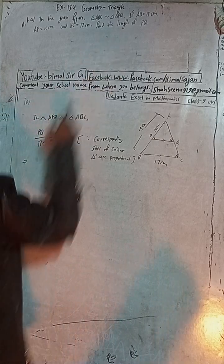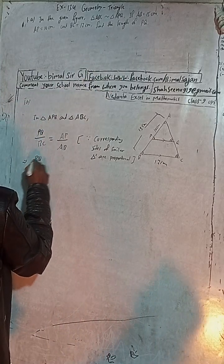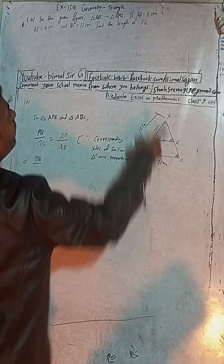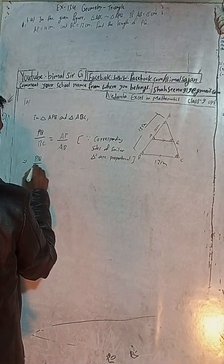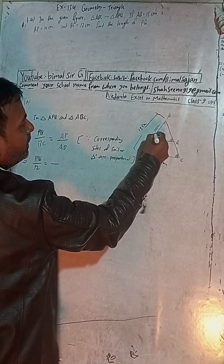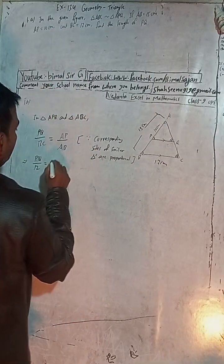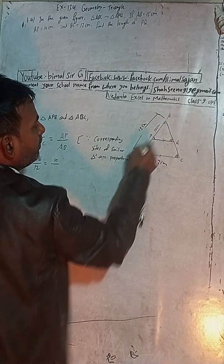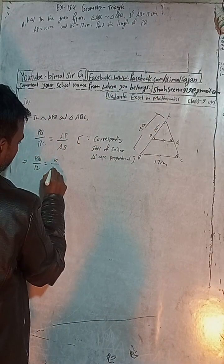So PQ is what we have to find. In the figure, BC is equal to 2 cm, AP is equal to 10, and AB is equal to 15. So we substitute: PQ over BC equals AP over AB, which gives PQ over 2 equals 10 over 15.